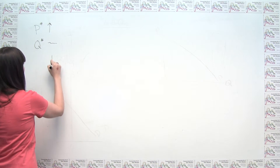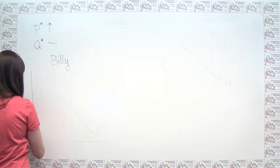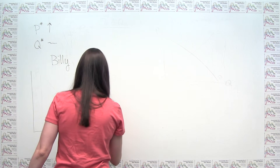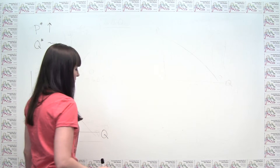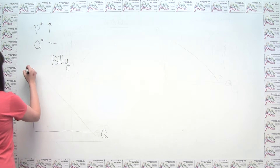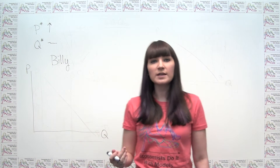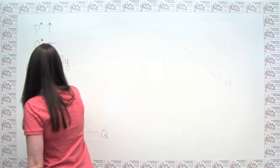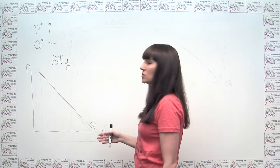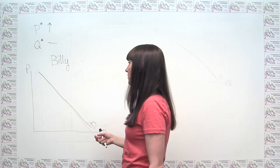We draw a supply and demand graph for Billy. We have quantity — market quantity, so capital Q — on the horizontal axis, and market price P on the vertical axis. We weren't told anything specific about our demand curve, so we draw it normally as downward sloping, because demand curves obey the law of demand: price and quantity demanded move in opposite directions.